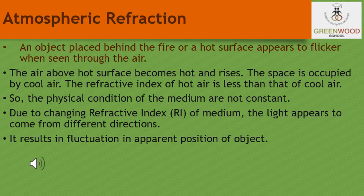You might have observed the apparent random wavering or flickering of objects seen through a turbulent stream of hot air rising above a fire or a radiator. The air just above the fire becomes hotter than the air further up. The hotter air is lighter, i.e., less dense than the cooler air above it, and has a refractive index slightly less than that of the cooler air. Since the physical conditions of the refracting medium, i.e., the air, are not stationary, the apparent position of the object as seen through the hot air fluctuates. This wavering is an effect of atmospheric refraction — the refraction of light by the earth's atmosphere on a very small scale in our local environment.